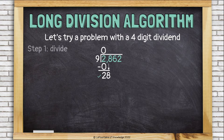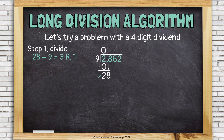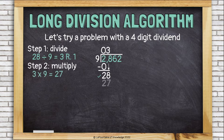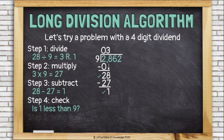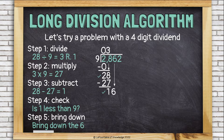Now divide 28 by nine. Nine doesn't go in evenly — 28 divided by nine is three remainder one, but don't worry about the remainder; it'll take care of itself. Put three on top. Multiply: three times nine is 27. Subtract: 28 minus 27 is one — there's the remainder, it worked itself in. Check: is one less than nine? Yes. Bring down the six to sit next to that one, creating the number 16.